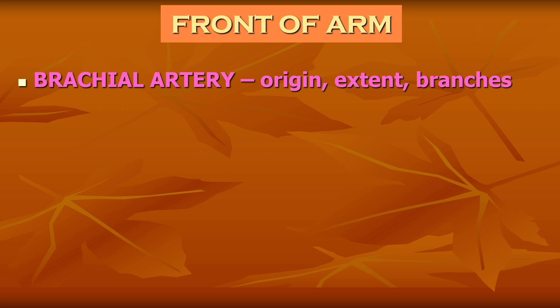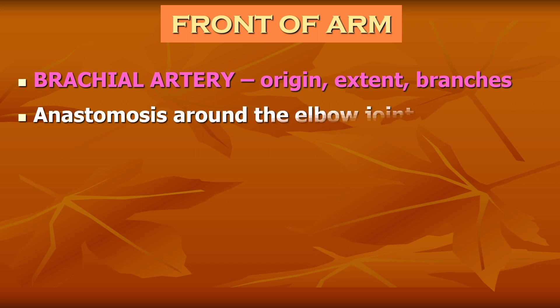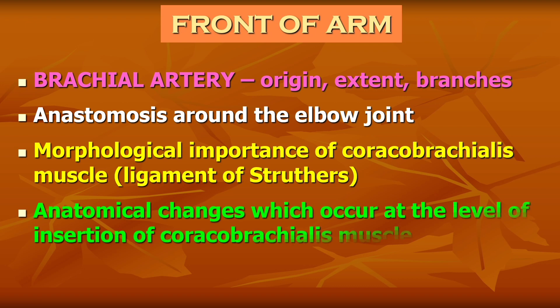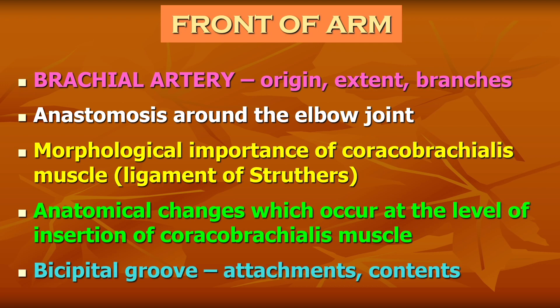Other questions which can be asked on the front of arm include anastomosis around the elbow joint, morphological importance of the coracobrachialis muscle focusing on the ligament of Struthers, anatomical changes which occur at the level of insertion of the coracobrachialis muscle, and sometimes the bicipital groove can be asked for its attachments and contents — including the muscles attached to the medial lip, lateral lip, and the floor of the bicipital groove.